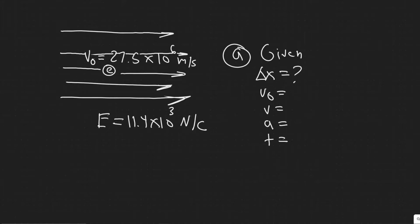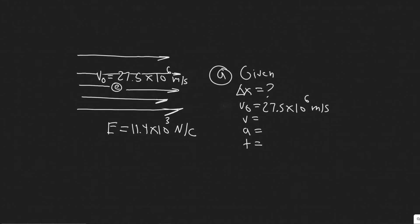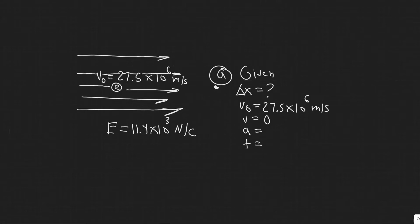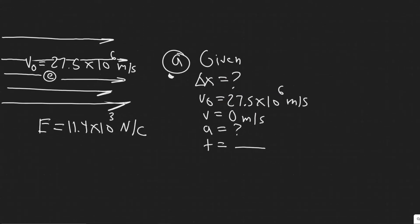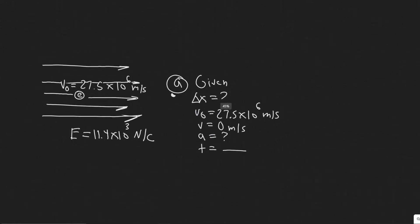What do we know? The initial velocity is 27.5 times 10 to the 6 meters per second. We also know that when it stops, its final velocity is zero meters per second. We don't know how long this will take. What you should see is that we need to find the acceleration — because once we have the acceleration, we can solve for delta x.